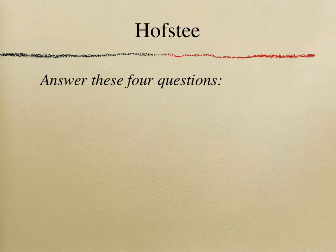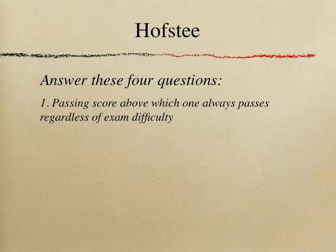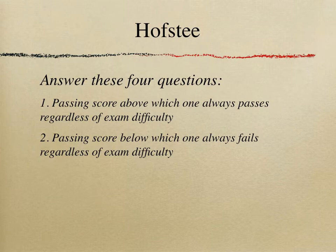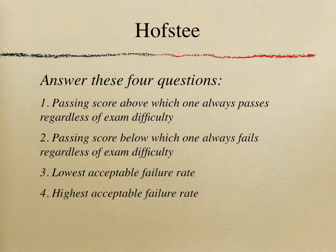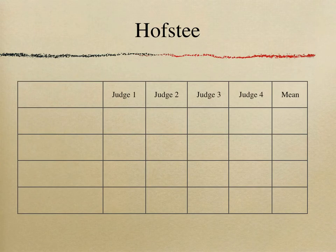If you have ever been asked to judge in a Hofstee system, you should be able to answer four questions. First: what would be a pass score above which pretty much all candidates will always pass, regardless of how easy or difficult the exam is? Second: what is the pass score below which pretty much everyone will always fail? Third: in a given exam, what is the lowest acceptable failure rate you expect? And fourth: what is the highest acceptable failure rate for that exam?